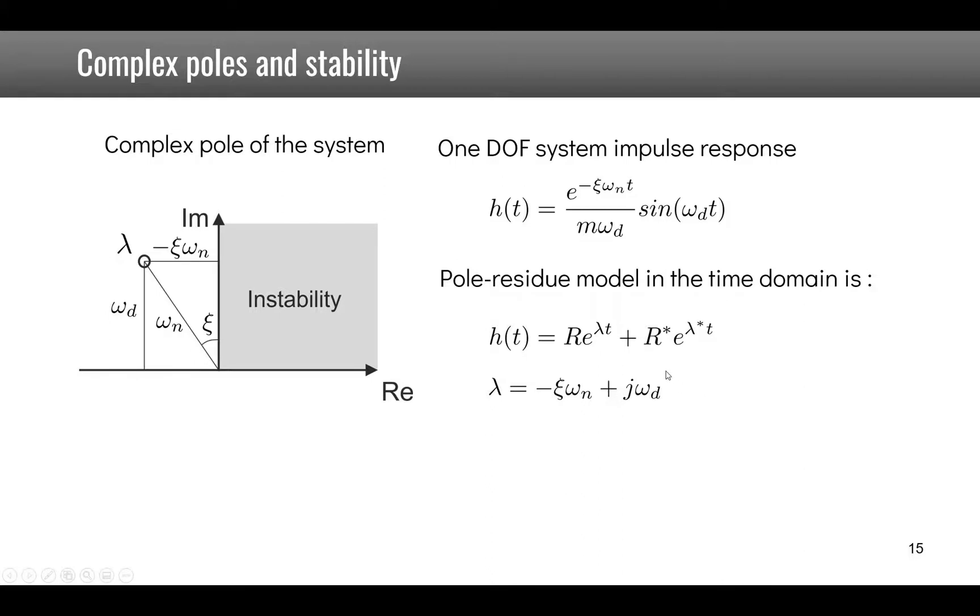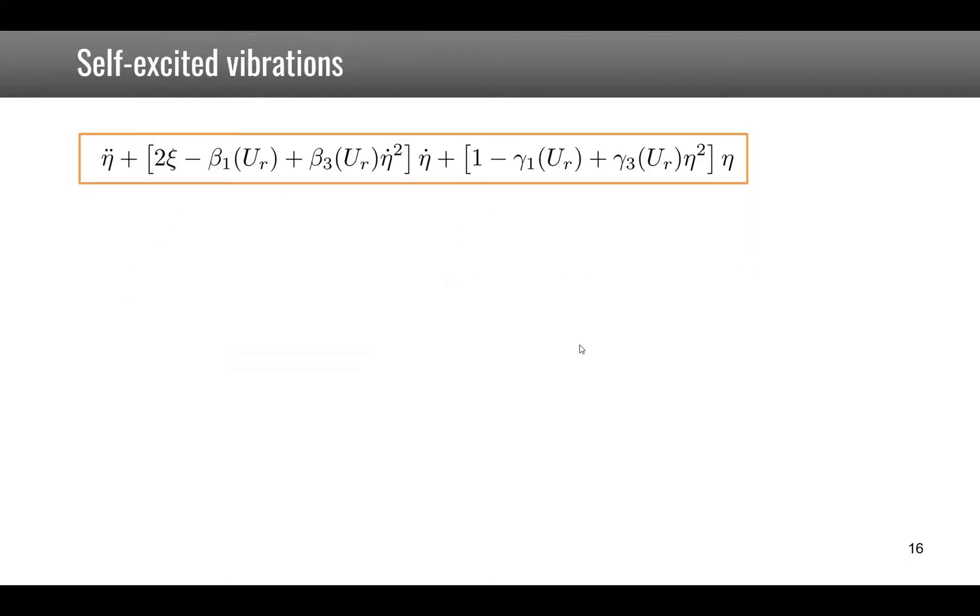So since this pole is given by minus psi omega n plus j omega d you see that there is an oscillatory part but that there is also the exponential part and what happens is that if this psi becomes negative so if the pole goes into the region with a positive real part it leads to instability because we have an exponential with a positive term and so an exponential that grows with time.